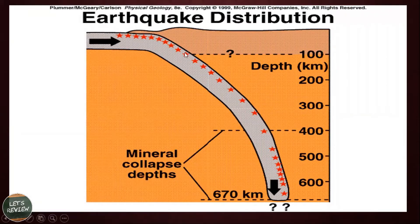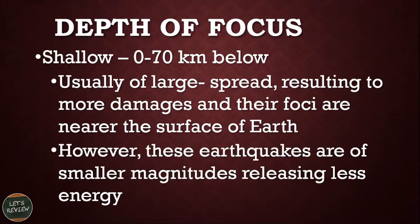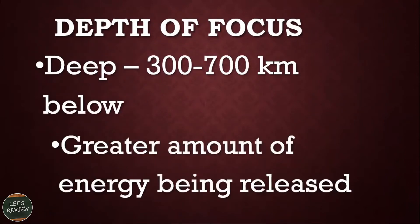Look at this picture as an example of the depth of the focus. Shallow earthquakes — 0 to 70 kilometers below — are usually of large spread, resulting in more damage, and their foci are nearer the surface of the earth. However, these earthquakes are of smaller magnitude, releasing less energy. In deep earthquakes — 300 to 700 kilometers below — there is a greater amount of energy being released.